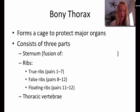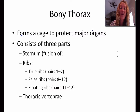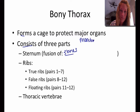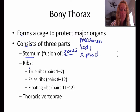The bony thorax forms a cage to protect major organs like your heart and your lungs. This consists of three parts. You have the sternum, which is the fusion of three bones — the manubrium, the body, and the xiphoid. Then the ribs: true ribs are pairs one through seven, false ribs are pairs eight through twelve, and floating ribs are pairs eleven and twelve.